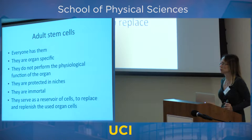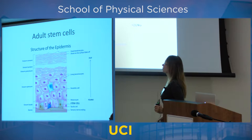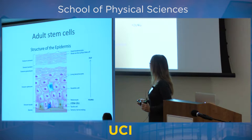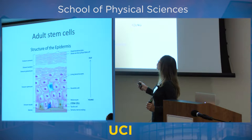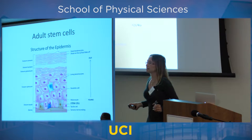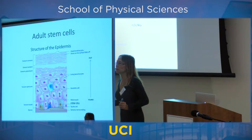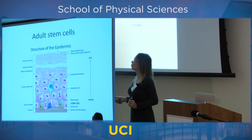Stem cells replenish cells that perform functions and are lost. For instance, this diagram shows skin. At the top is the surface of the skin, and you can see several layers consisting of different cell types. The stem cell sits at the bottom. When you go to the beach and are exposed to radiation, the top layer of cells is shed and lost. Cells beneath divide, and eventually the stem cell divides.